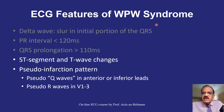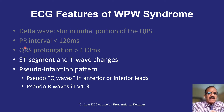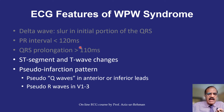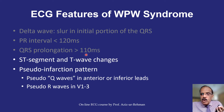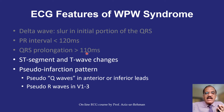The ECG features are: delta wave — a slur in the initial portion of the QRS complex; PR interval shorter than 120 milliseconds, which is three small squares (0.04 × 3 = 0.12 seconds); QRS prolongation more than normal (normal is 100ms) but less than 120ms since more than 120ms indicates bundle branch block. So QRS is broader than normal but not as broad as in bundle branch block.